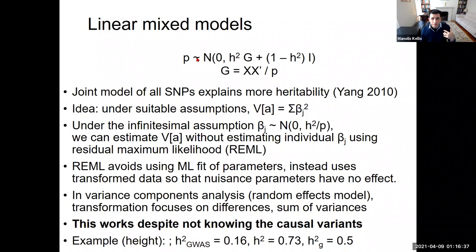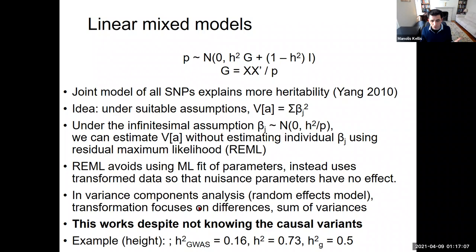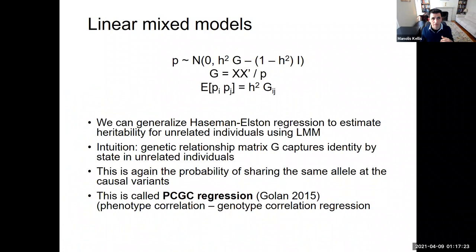The basic foundation of these linear mixed models is that you're building a joint model of all the SNPs and how they explain the total heritability of a particular trait according to the infinitesimal assumption, which we can estimate using the restricted maximum likelihood model. That avoids using an ML estimate for each of the parameters and instead uses transformed data so that all of the nuisance parameters have no effect. We're going to be using variance components analysis — this random effects model — that allows us to capture these transformations. The beauty of all this is that it actually works despite not knowing the actual causal variants.